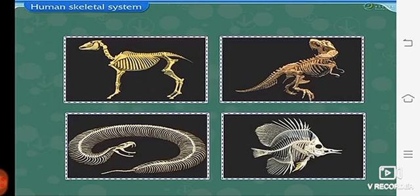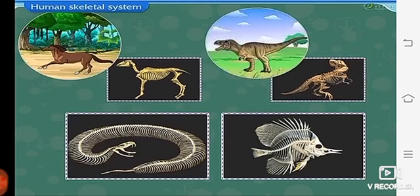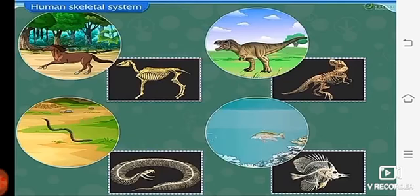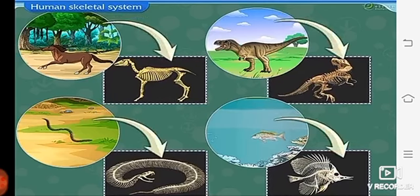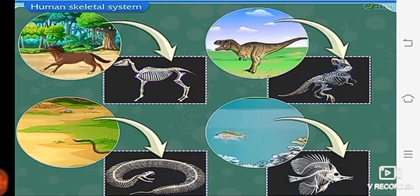The first one is a horse. Next, dinosaur. Next, fish. And the last one, snake. These animals can be identified based on their skeleton. The structure and arrangement of bones in each of these animals is different. Every bone has a specific structure based on the type of movement they perform.